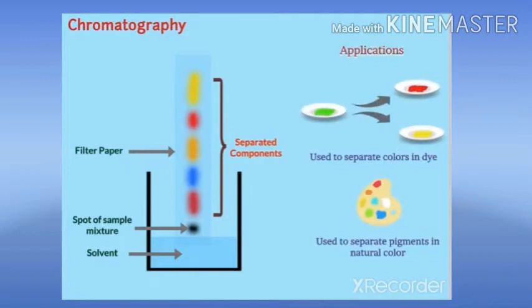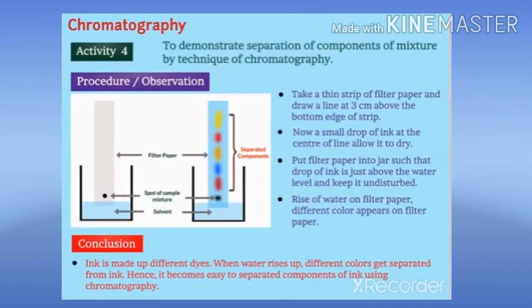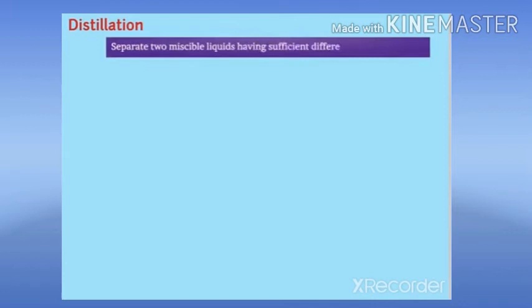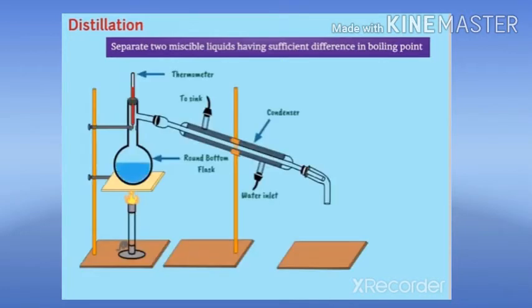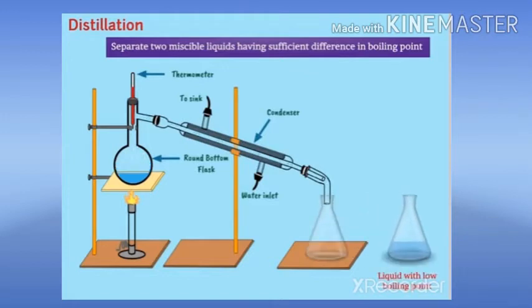Distillation. This process is used to separate two miscible liquids having a sufficient difference in boiling point. In the mixture, the liquid with a lower boiling point evaporates first, undergoes condensation, and is collected in a container. The liquid with a high boiling point evaporates later; hence it becomes easy to separate both liquids.